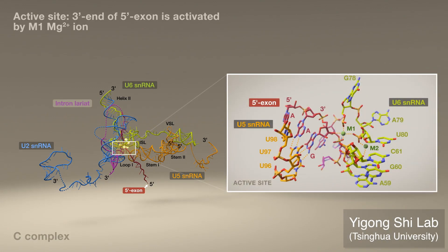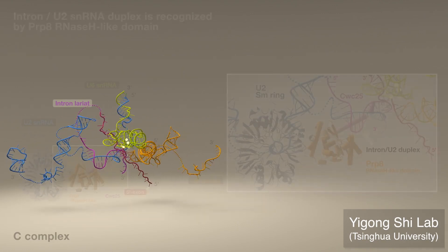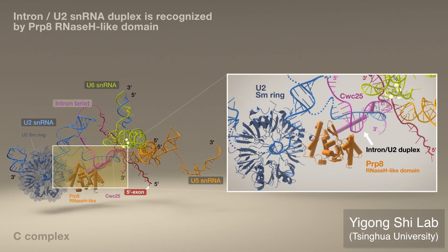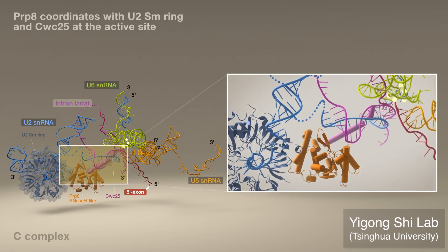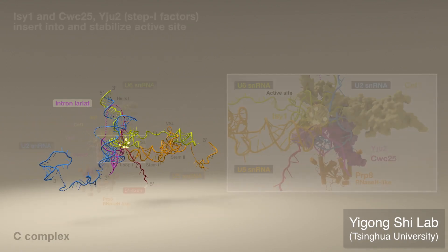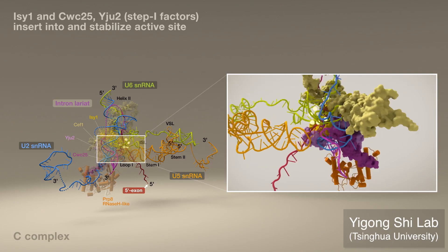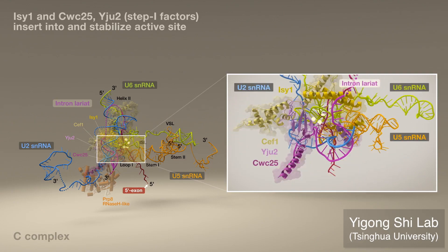In the nearby active site, the 3' end of the 5' exon is activated by the M1 ion. However, the lariat junction still lingers, and the intron 3' exon phosphodiester bond, which is to be cut in the second step reaction, is yet to be loaded. Meanwhile, the intron U2 duplex is recognized by PRP8, which also coordinates with the U2-SM ring and CWC25, whose alpha-helical rod extends from the RNase H-like domain deeply into the active site. Importantly, these step 1 factors and proteins which are inserted into and stabilize the active site conformation form a scaffold onto which multiple RNA elements are placed, and they directly contact the BPS-U2 duplex.